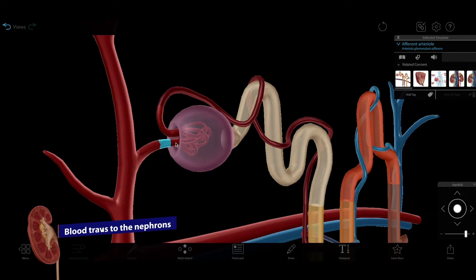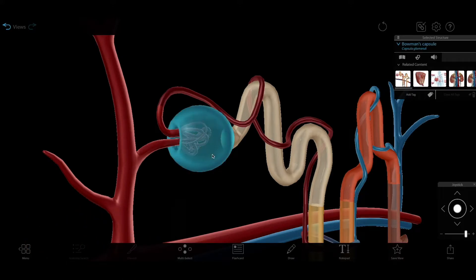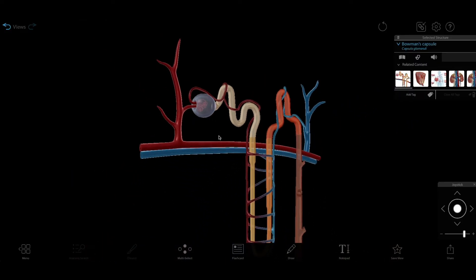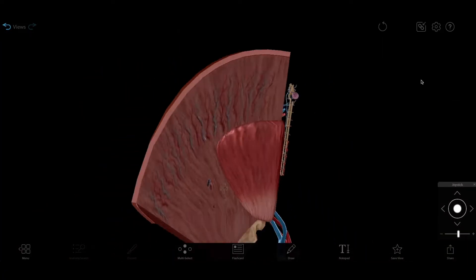From one of the afferent arterioles, blood flows into a network of capillaries called the glomerulus. The glomerulus and the glomerular capsule that surrounds it is part of a nephron, one of the functional units of the kidney. Each kidney has about one million of them.